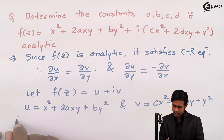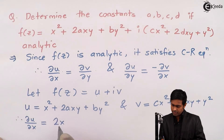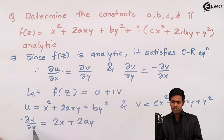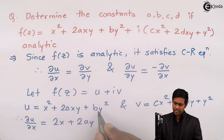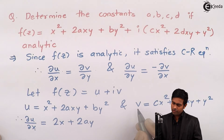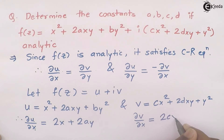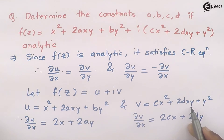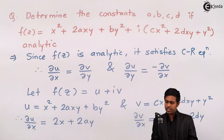Now let us find ∂u/∂x. Differentiating u partially with respect to x, we get 2x + 2ay, since b and y are both constant so their derivative is 0. Similarly, ∂v/∂x gives us 2cx + 2dy.